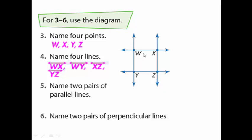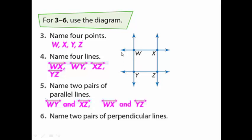For example, we can choose WY as the first line and XZ as another parallel line — they are parallel together, both standing upright vertically. We also have WX and YZ — they are parallel lines as well.